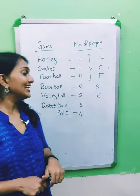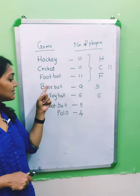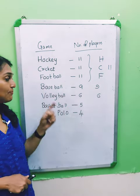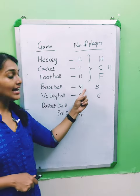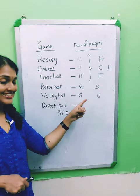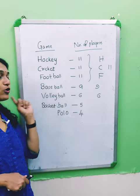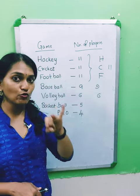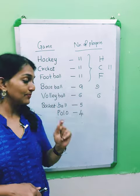Now let's try baseball and volleyball. There are 9 players in baseball and 6 players in volleyball.